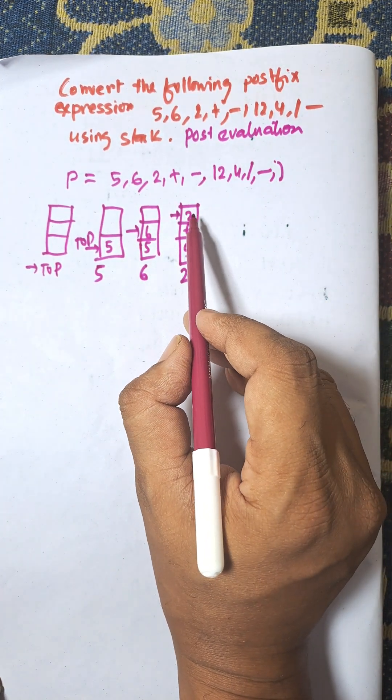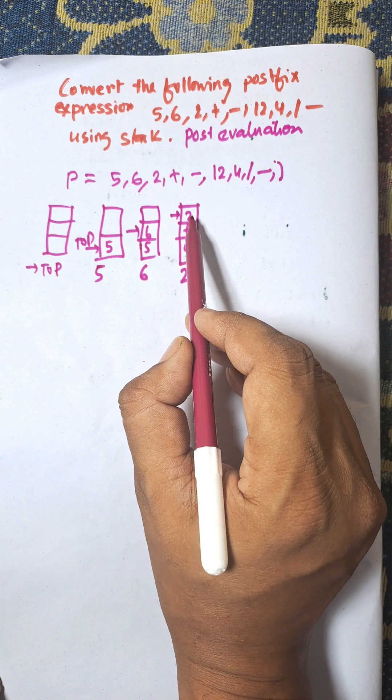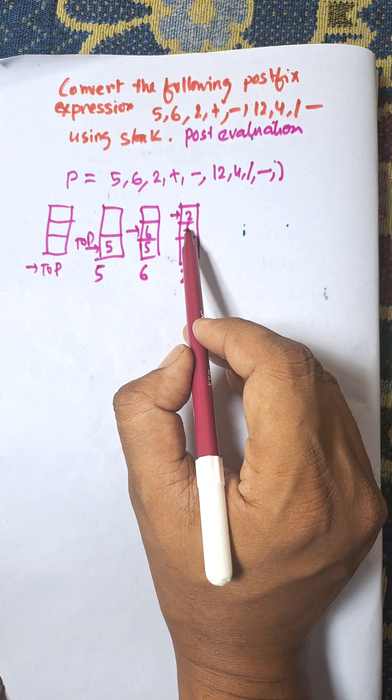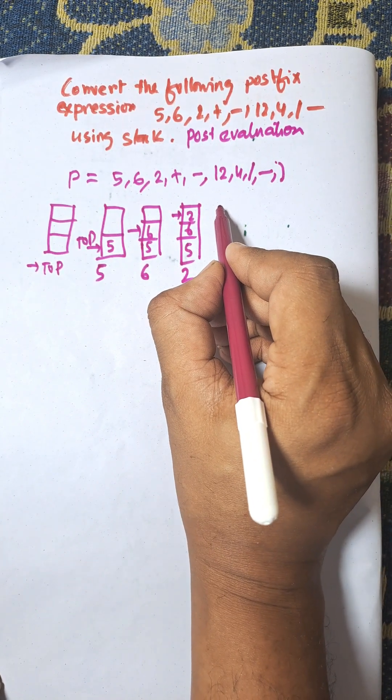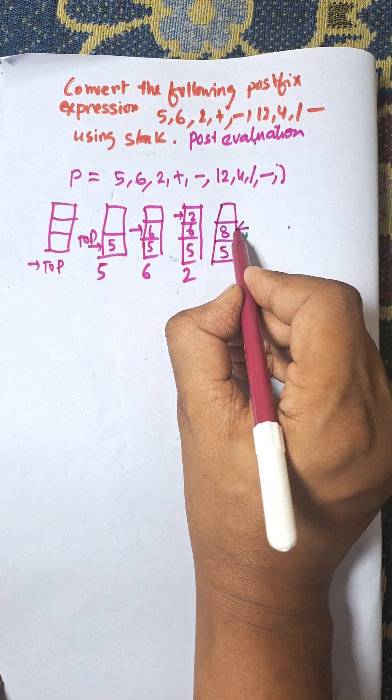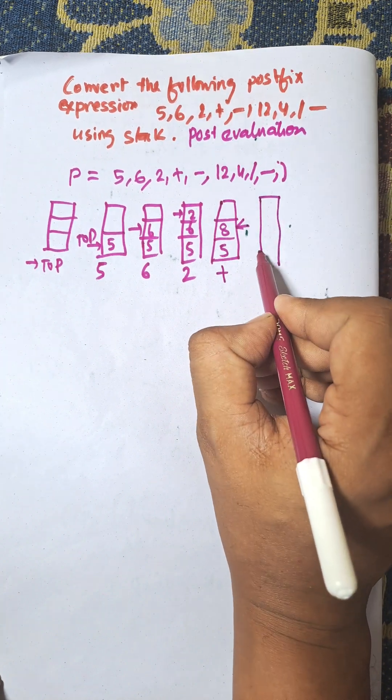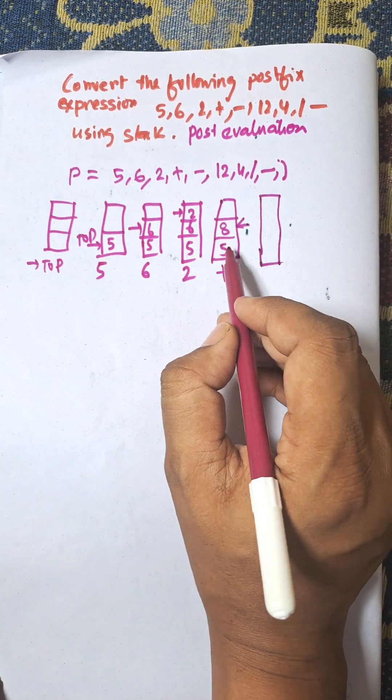Then, plus. Next, we need to pop next element, that is, top element and next to top element, and we need to calculate 6 plus 2, that is equal to 8, and we need to push the result back to stack, that is 5 and 8. So, this is for plus. Remember, when operators arrive, we need to perform the operation.